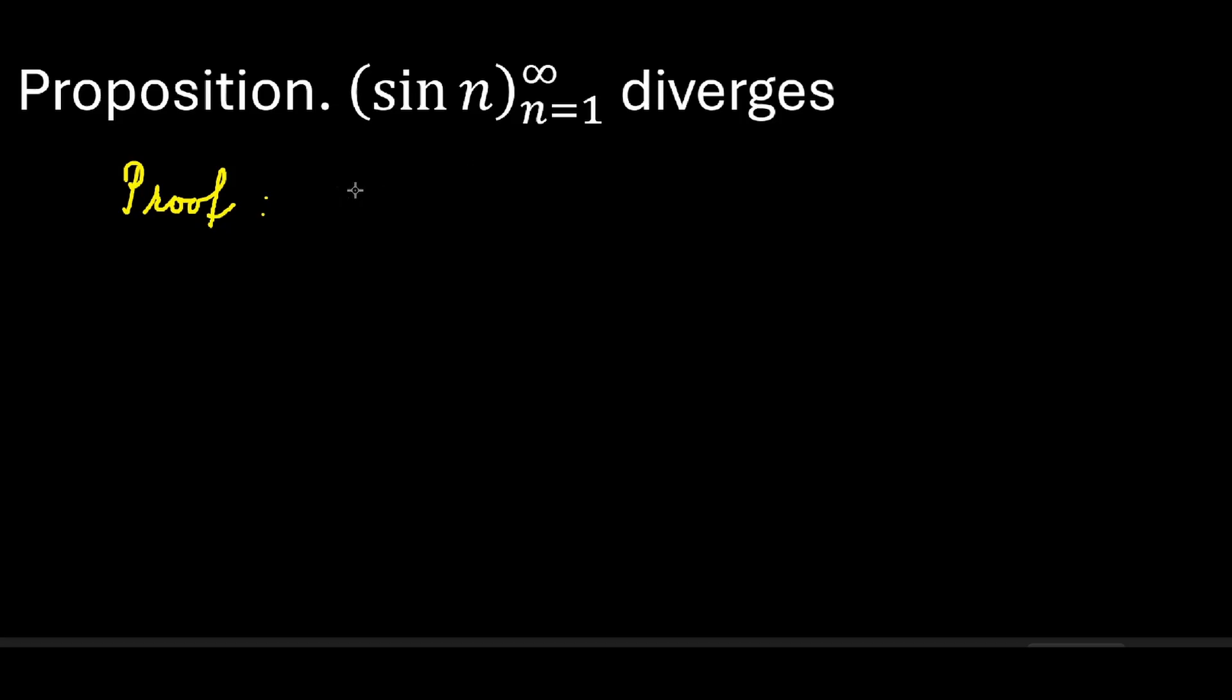We're going to use proof by contradiction. Assume for the sake of contradiction that the sequence sine of n does converge. That is, it has a limit. Let's call that limit L. From that we wish to derive a contradiction.